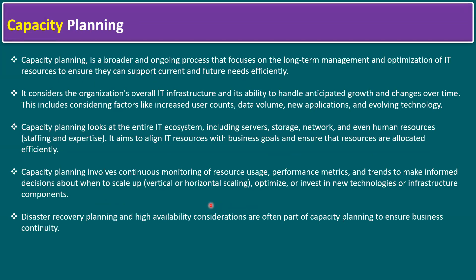Capacity planning is a broader and ongoing process focused on the long-term management and optimization of IT resources to ensure they can support current and future needs efficiently. For capacity management, we may use internal tools. In a VMware environment using vSphere and vCenter, the recommended tool from VMware is ARIA Operations — formerly called vRealize Operations Manager — which has a capacity planning feature that shows current usage and forecasts for the next six months or one year, helping plan when to add additional nodes to a vCenter cluster.